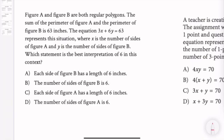Figure A and figure B are both regular polygons. The sum of the perimeter of figure A and the perimeter of figure B is 63 inches. The equation 3x plus 6y equals 63 represents a situation where x is the number of sides of figure A and y is the number of sides of figure B. Which statement is the best interpretation of 6 in this context?